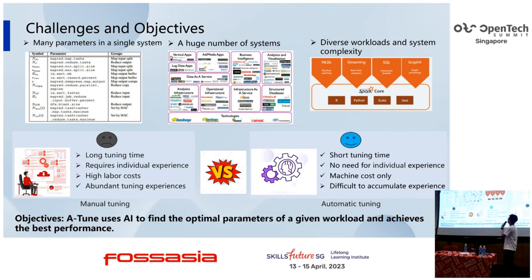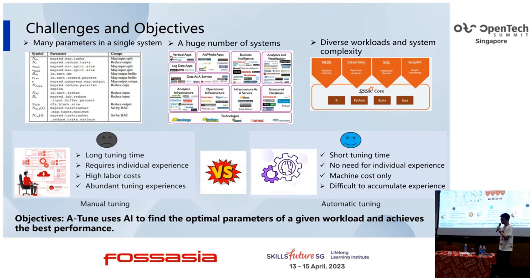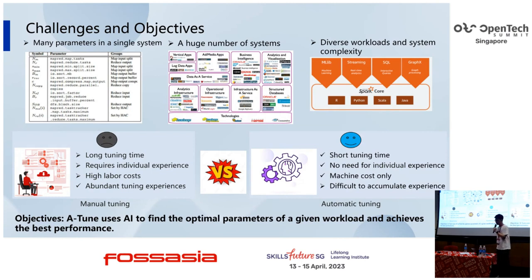The third challenge is diverse workloads and system complexity. For example, even in Spark there are all kinds of workloads, including ML, lab streaming, cycle, and graph processing. Different workloads also need different kinds of parameters.